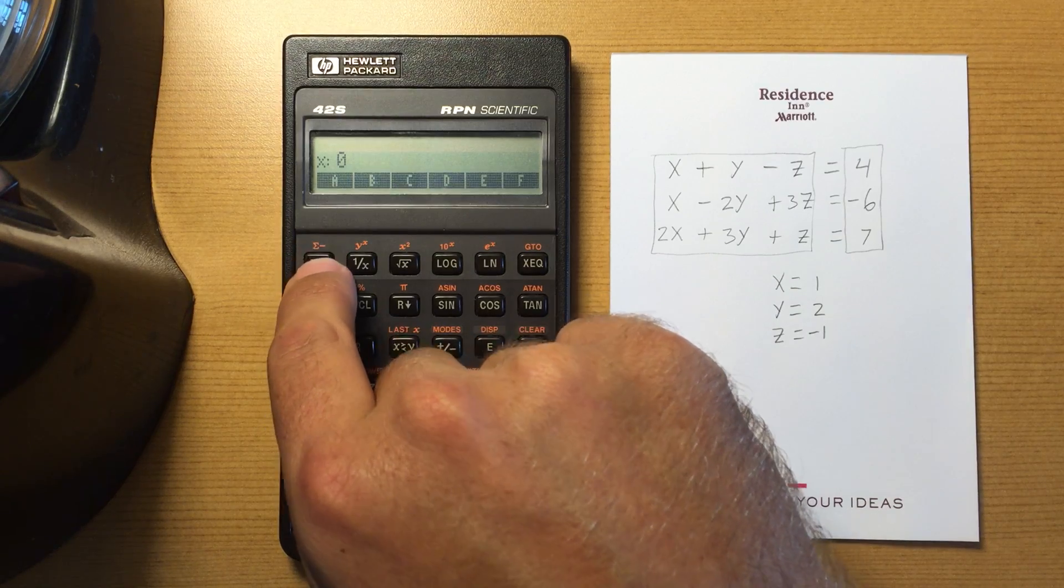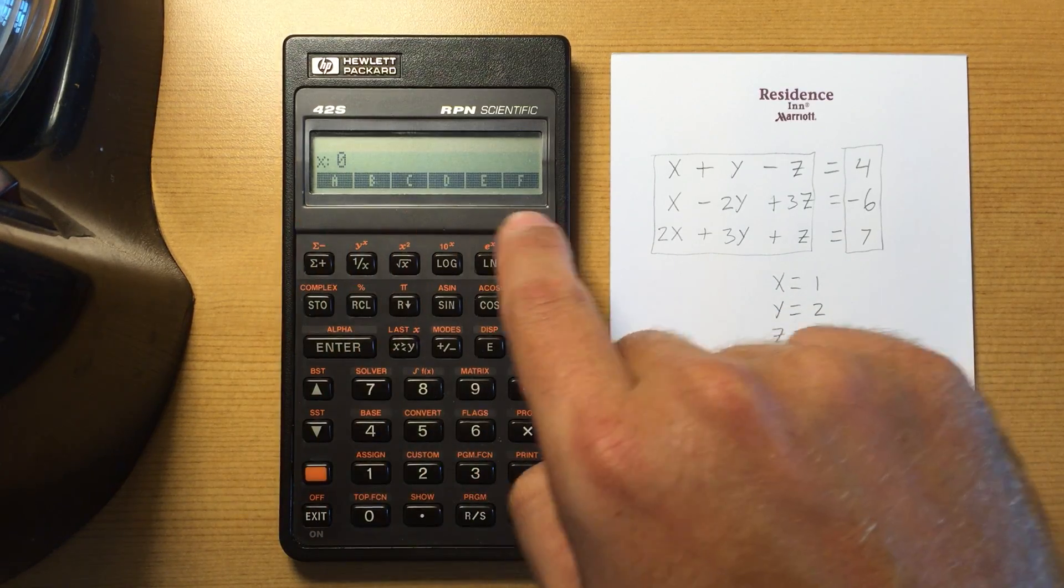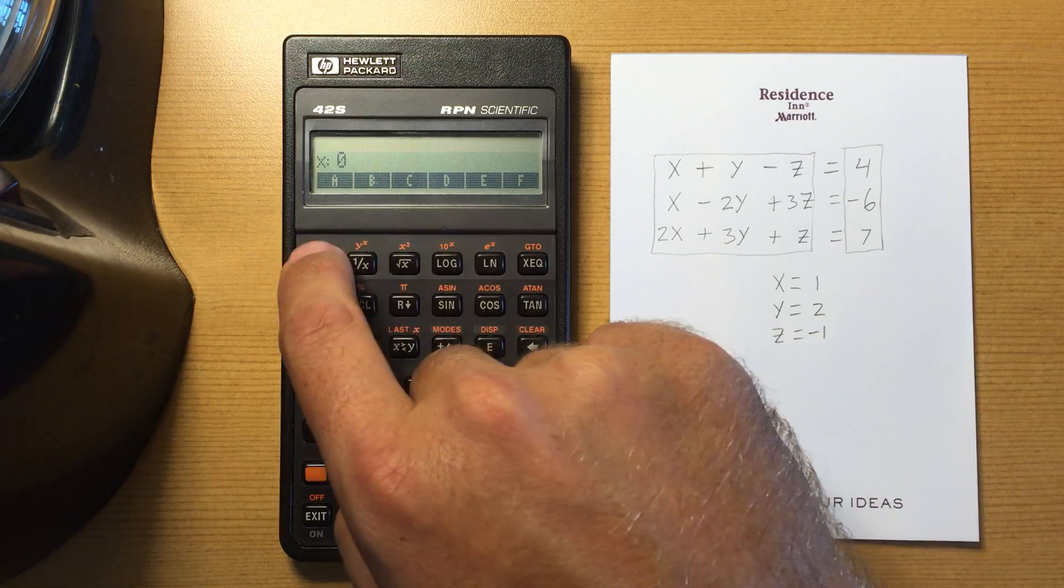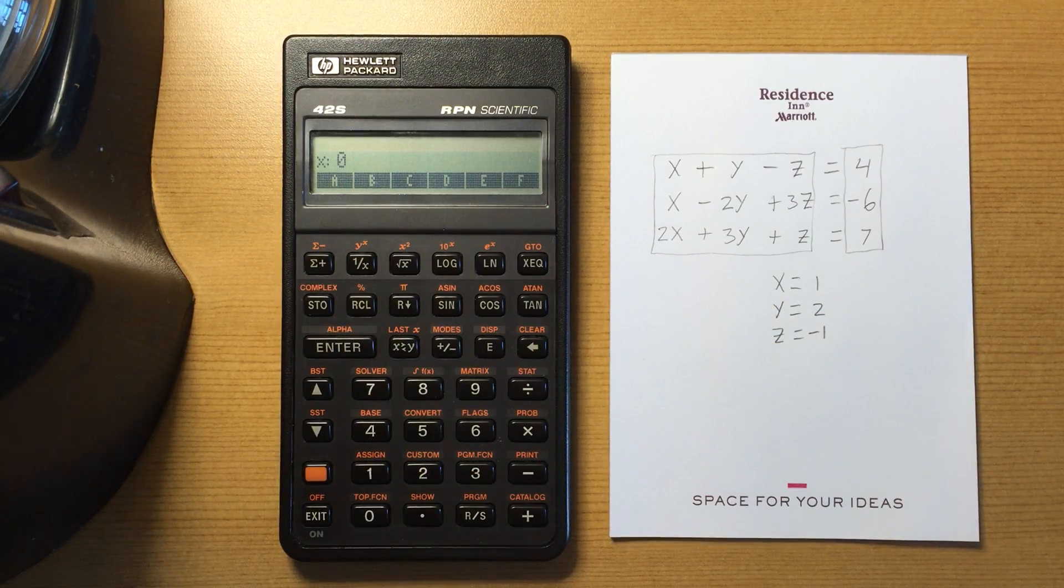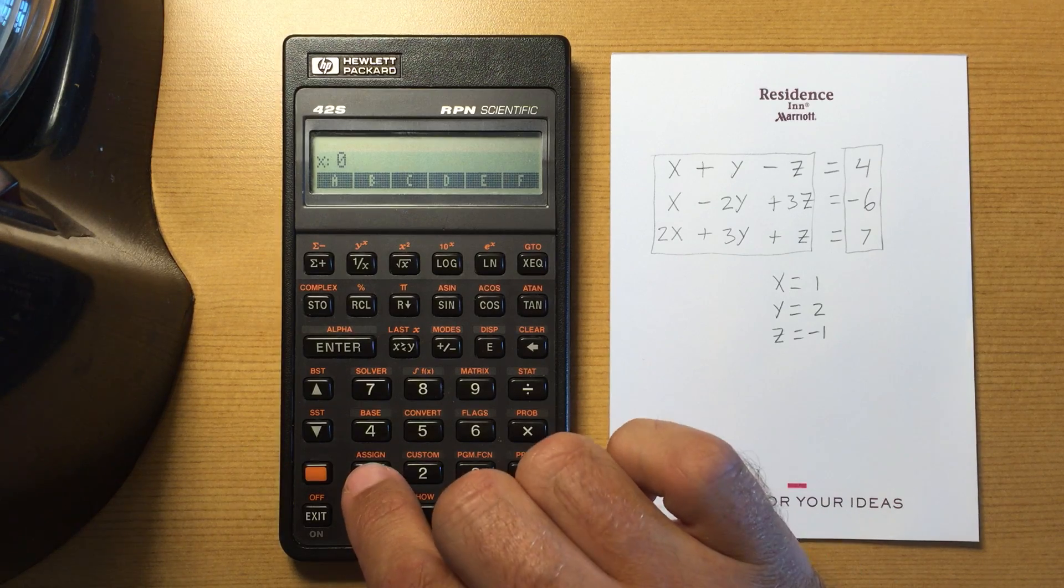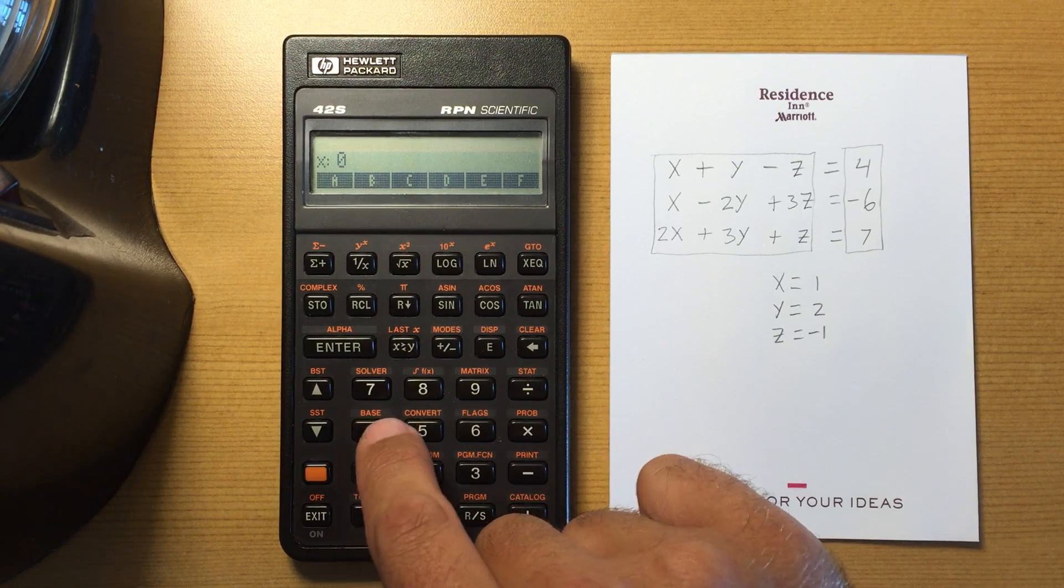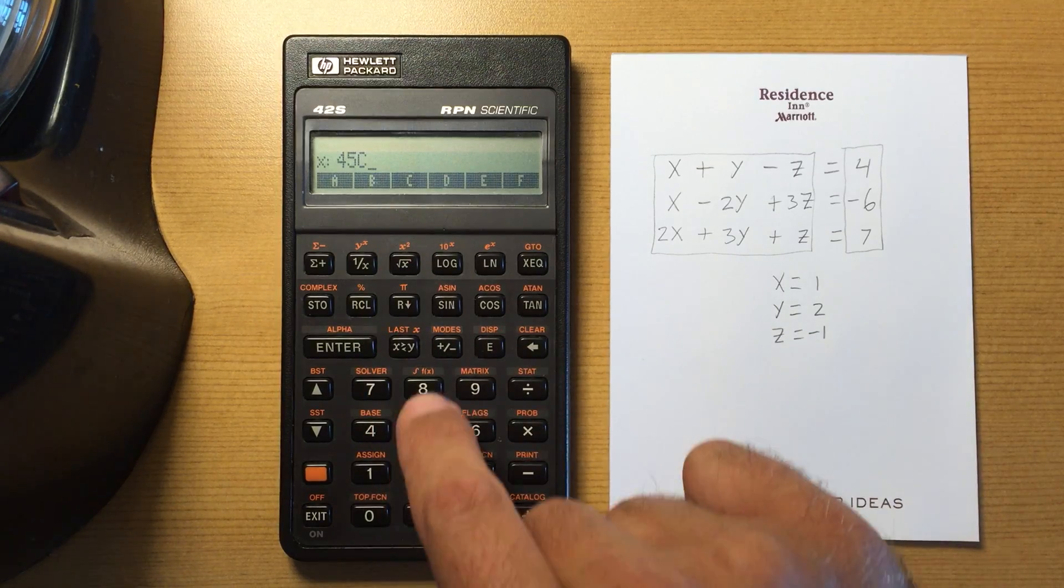Pick the A through F, that gives me the A through F on my soft keys up here, and that also switches me into hexadecimal mode. So I can enter in hexadecimal numbers fairly easily: 4, 5, C, 4, B.